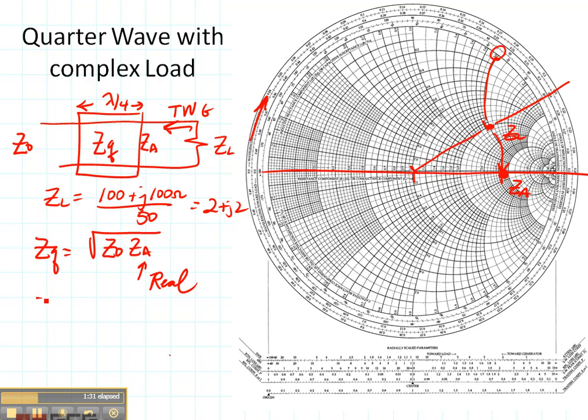ZA, read your real part right there, is 4 and then I need to remember to denormalize it by multiplying by Z0. So that is about 200 ohms.